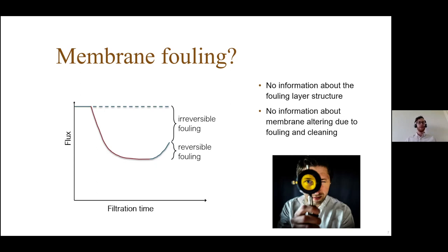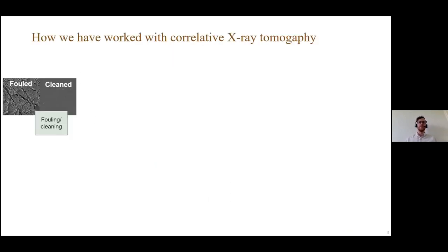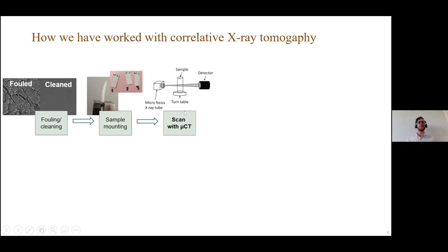For this, we collaborated with Emmanuel and other people and wanted to look at the inner structure of a membrane. We did this with correlative x-ray tomography. Here's the scheme how we did it: First, we fouled and cleaned membranes. Then we cut them in small pieces and had a sample mounting for lab-scale microtomography. Then we did a phase retrieval and image analysis where you can see the local thickness of the membrane sample.